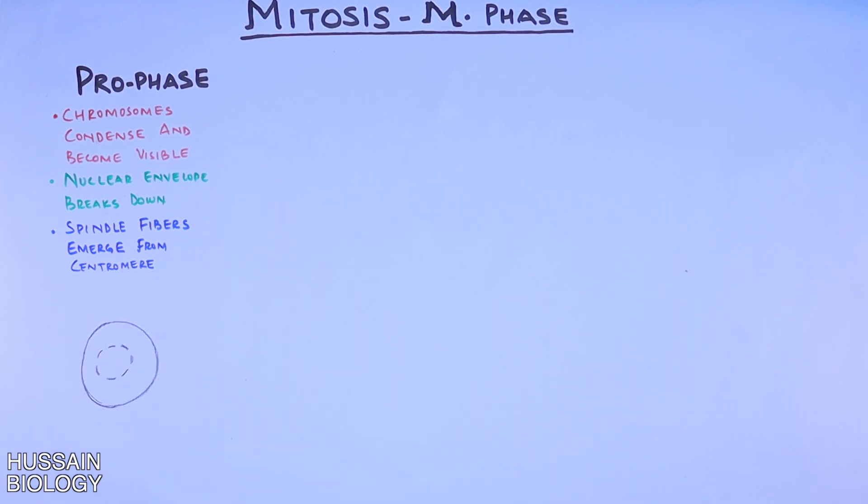Here in this diagram, we have a cell in which the chromosomes have condensed and the spindle fibers have started to emerge from the centrosomes.